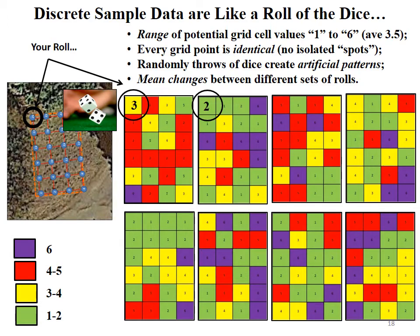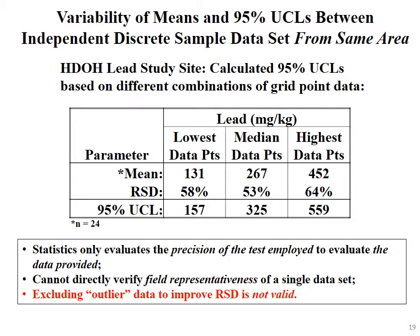Think about this in terms of risk assessment. Back to the lead site with real data: if we take the lowest concentration of lead detected at each grid point, the mean is 131 ppm — below our action level of 200 ppm, with an RSD of 58% and a 95% UCL of 157 ppm — still below the action level, so you'd be done at this site. But if we use the highest concentration at each grid point, suddenly the mean is 452 ppm, RSD is 64%, and the 95% UCL is 559 ppm — now it's above our action level. So which is it? Is this site contaminated above our action level or not? We have no idea in reality.